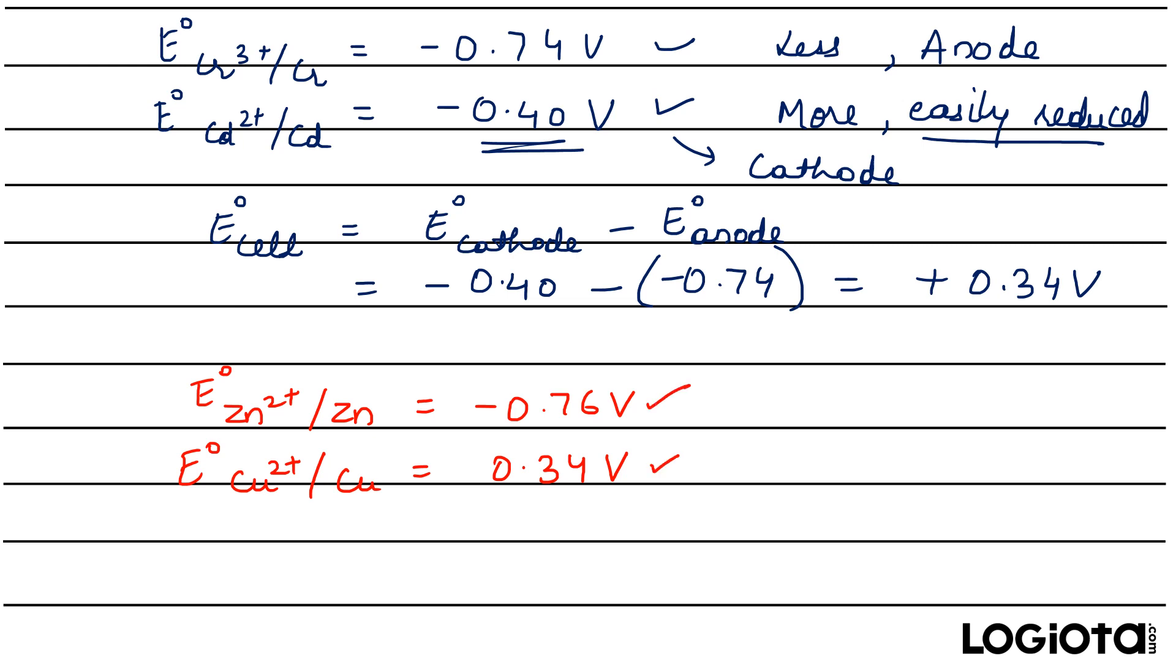Now can you tell me which one is cathode and which one is anode? First compare the values. We can see that this is more so it means that it is a cathode and the other one is anode.